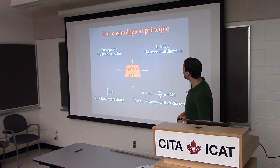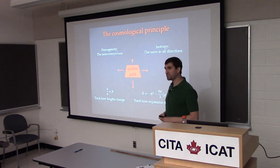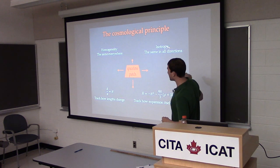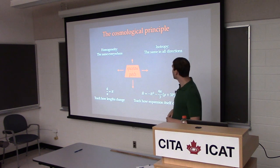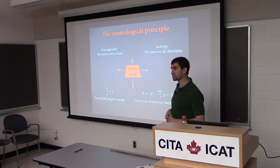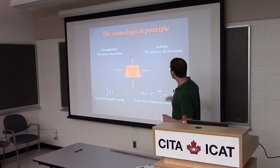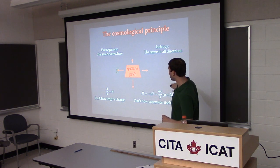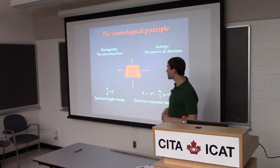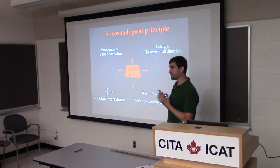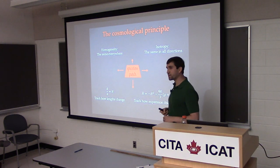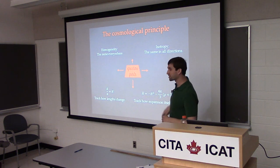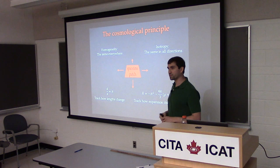What I would like to do is essentially relax this condition and try to probe whether it is true, and whether anything unexpected happens if we drop this assumption. By homogeneity we mean the universe looks the same everywhere, no matter where you are. By isotropy, we mean it looks the same in all directions. So if I have some spacetime patch, no matter where I am or what direction I look, everything looks the same.